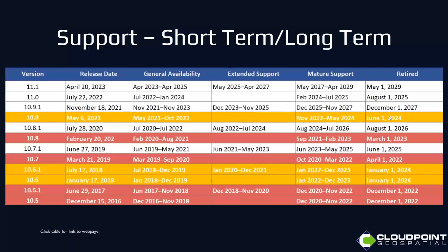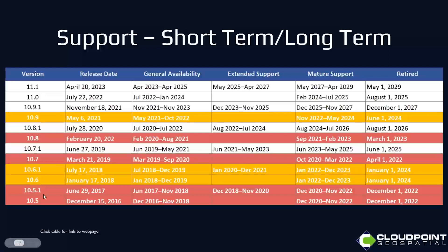I wanted to highlight some things that are retiring, especially for those on lower versions. Everything in red is already retired. 10.7 is labeled because it's a short-term support release. 10.5.1, 10.5, 10.7, and 10.8 are officially retired. The dot-one versions are still good. 10.6.1 is actually retiring soon as well, so for anybody at that version, it is time to upgrade.